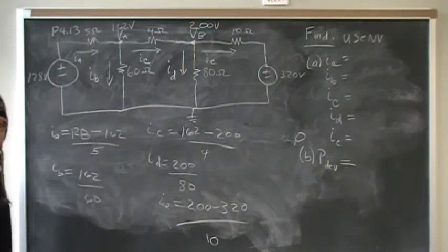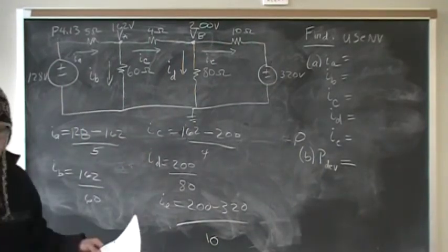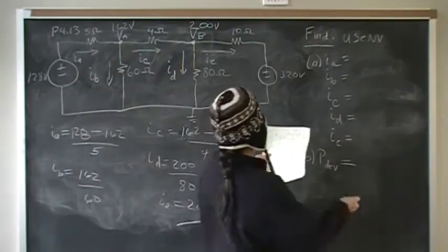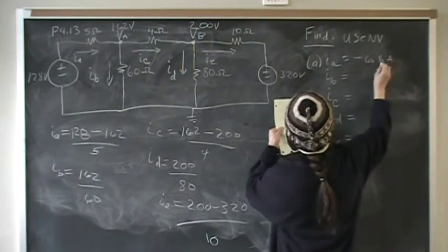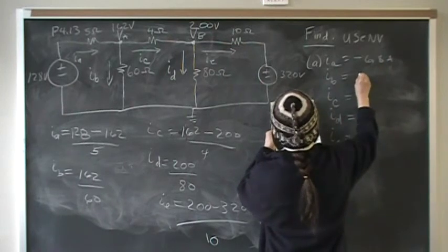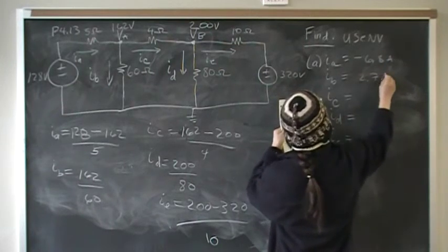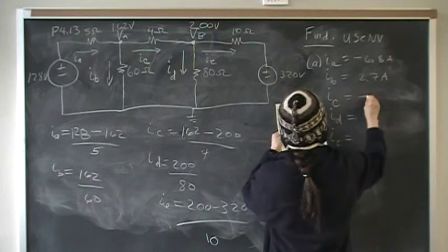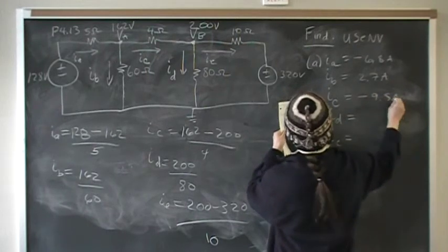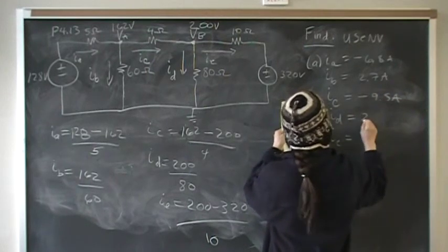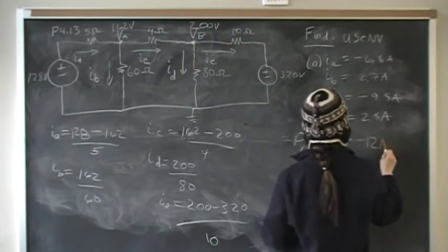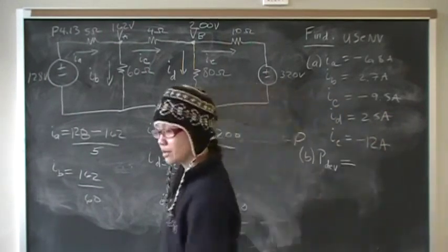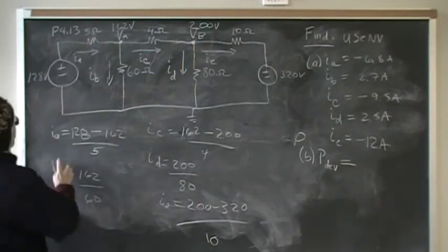And those are your branch currents. When you put those in your calculator, you should come up with IA is negative 6.8 amps, IB is 2.7 amps, IC is negative 9.5 amps, ID is 2.5 amps, and IE is negative 12 amps. So that takes care of part A.